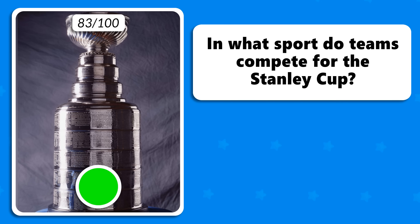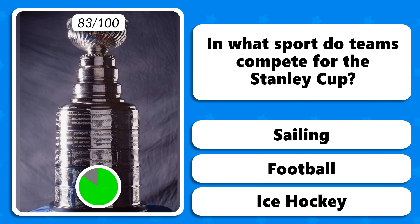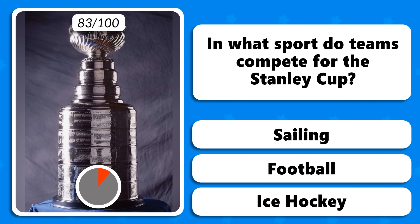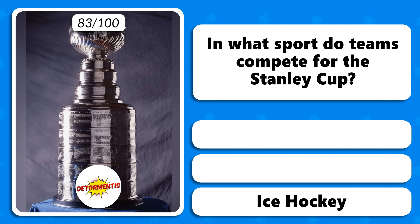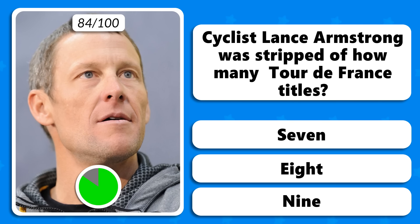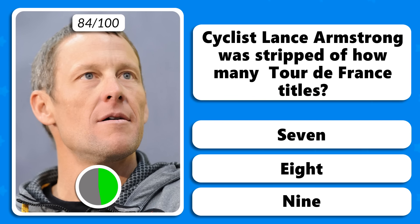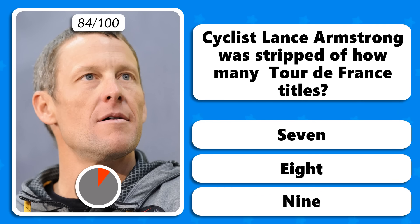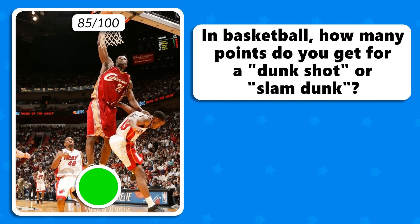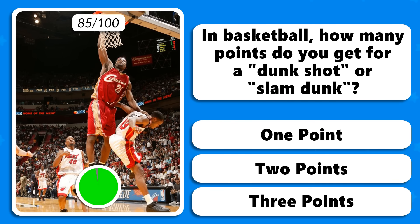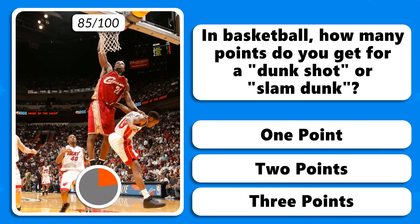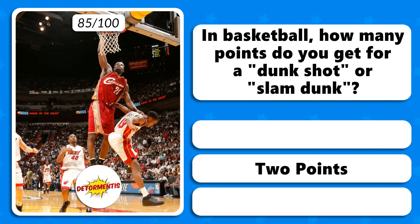In what sport do teams compete for the Stanley Cup — in sailing, football or ice hockey? The correct answer is ice hockey. Cyclist Lance Armstrong was stripped of how many Tour de France titles — 7, 8 or 9? 7. In basketball, how many points do you get for a slam dunk — one point, two or three points? You get two points.